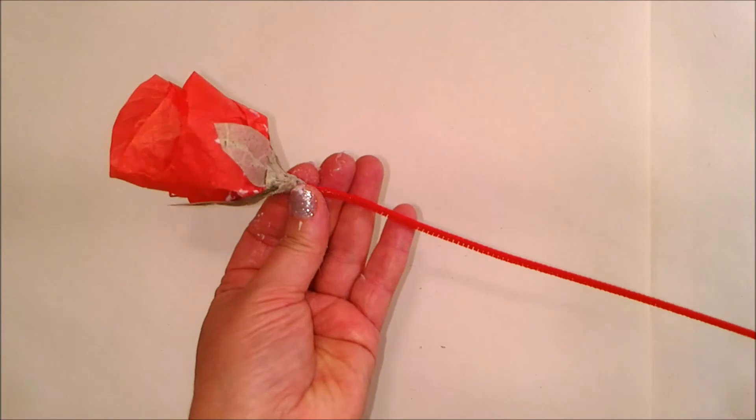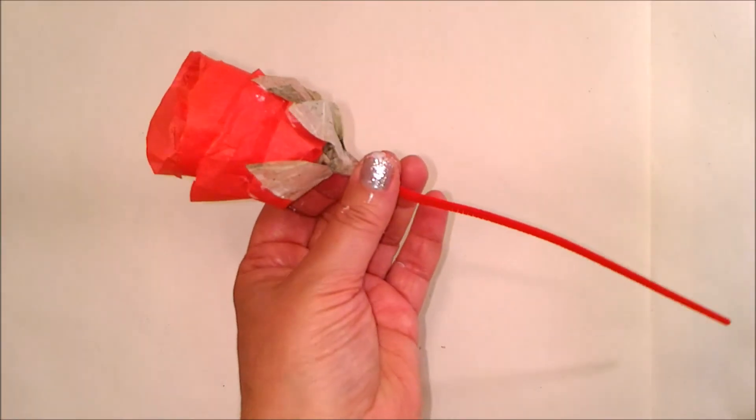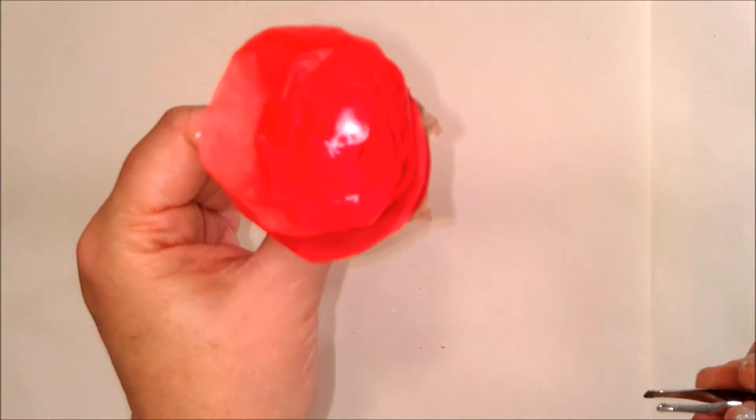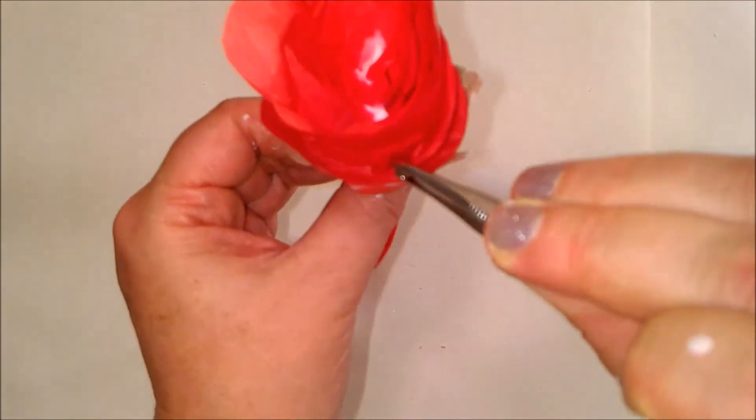And here you go. A very simple rose out of tissue paper. If you like, you can curl back the edges or you can leave them natural.